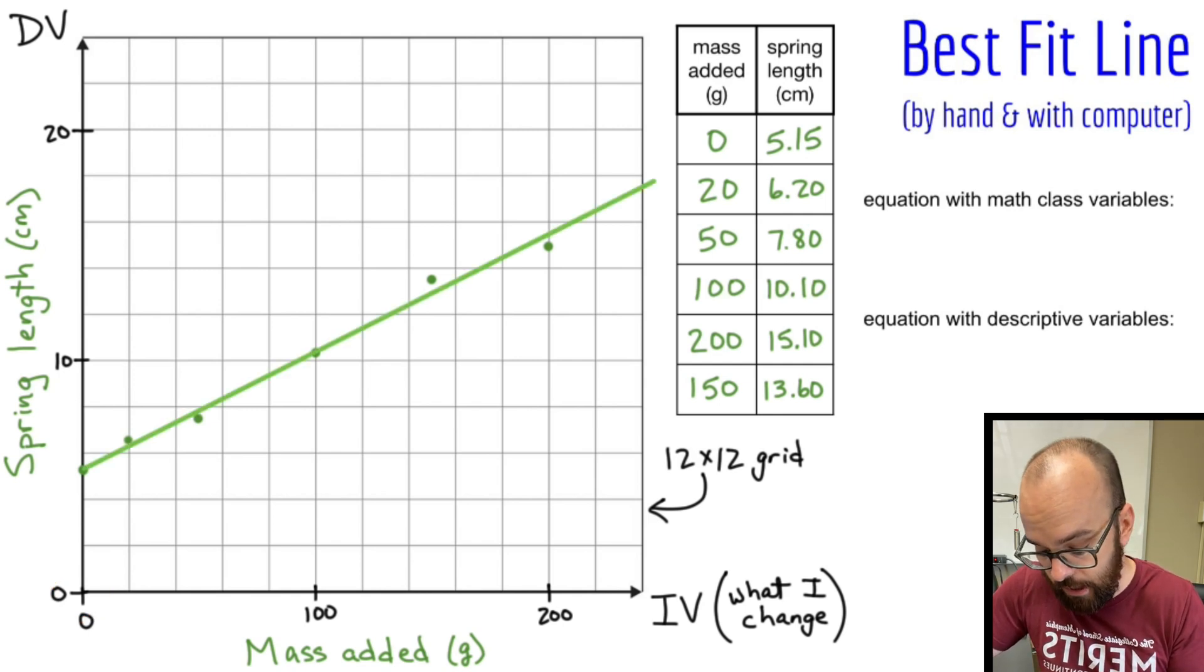So here's my good best fit line that I drew right there. And notice some things about it. I've got two points above the line, two points below the line, and the points that are above are kind of spread out from each other. And the points that are below are kind of spread out from each other. So that's a pretty good line of best fit.